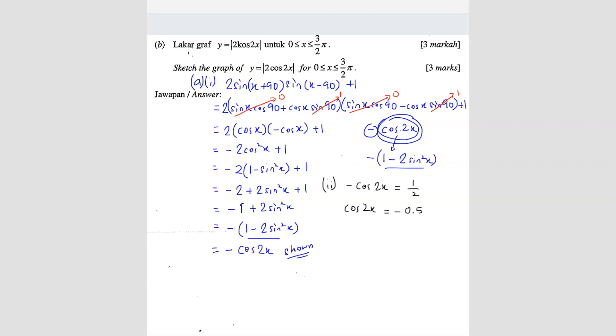So like this. So we want to find the reference angle first. So reference angle for this, cos inverse 0.5 will be 60 degrees. So from here we know that 2x is equals to... So this is a negative, right? So negative means in what quadrant will you get negative?